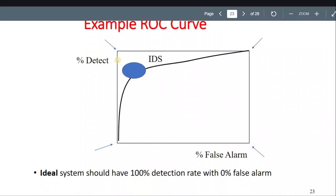So this is the ROC curve. The y-axis is detection rate — 100% to 0%. We want a high detection rate. But we also have a false alarm rate. It can detect all the attacks, but maybe it also detects false alarms. Even if it has 100% detection rate, we do not want any false alarms. So we want the x-axis to be at 0 and the detection rate to be at 100%.